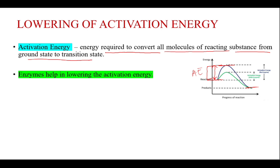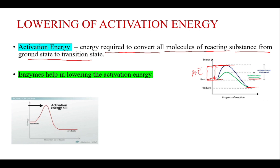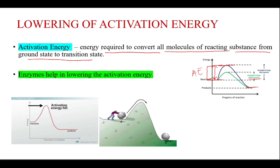Enzymes help by decreasing the activation energy so that the reaction can occur easily. If you understand this with the help of this diagram, enzymes basically create a tunnel so that the work becomes easy. Rolling a stone over a hill is much tougher compared to rolling it through a tunnel — so enzymes basically decrease this activation energy.